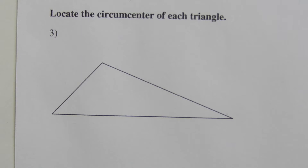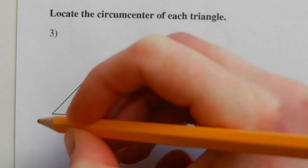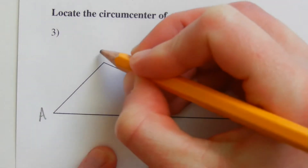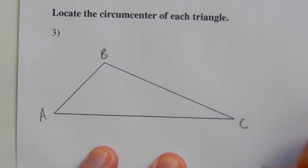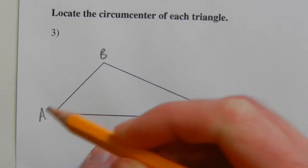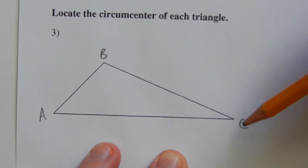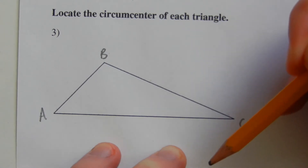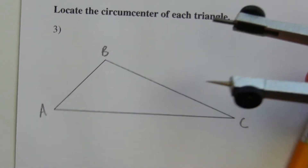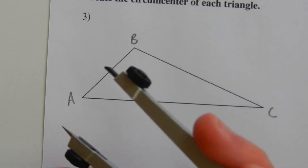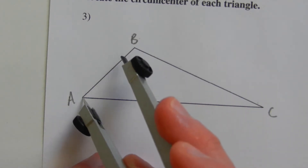Number three says to locate the circumcenter of each triangle. The circumcenter is where the perpendicular bisectors of each side of the triangle intersect, but in order to find that intersection we only need the perpendicular bisectors of two out of those three sides. I'll label the endpoints A, B, and C, and I'm going to find the bisector of AB and the perpendicular bisector of BC.